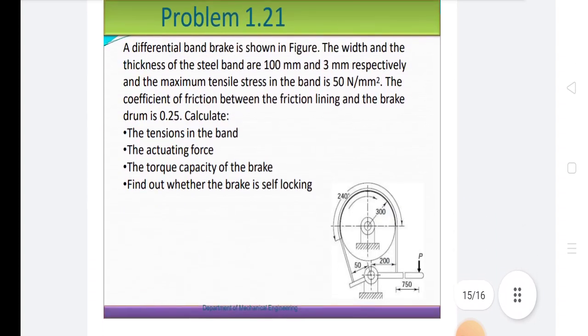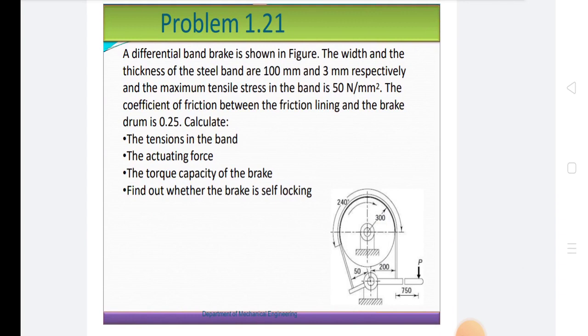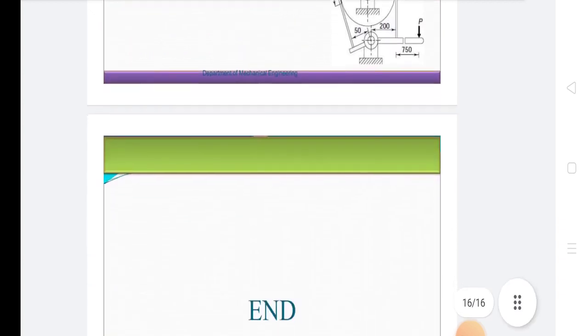These are the problems on differential brakes. A differential band brake is shown in figure. The width and the thickness of the steel band are 100 mm and 3 mm respectively, and the maximum tensile stress in the band is 50 N/mm². The coefficient of friction between the friction lining and the brake drum is 0.25. Calculate the tension in the band, the actuating force, the torque capacity of the brake, and find out whether the brake is self-locking.